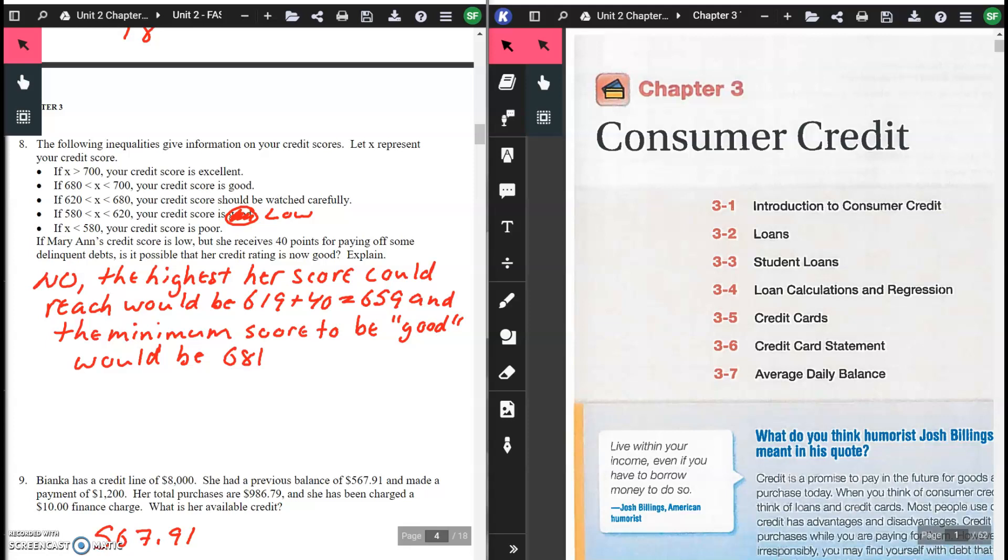Low would mean the highest low would be 619. If you look right up here at the top, between 580 and 620, the highest low that she can get would be 619. Add 40 to that, gives you 659. 659 is going to fall in this range right here, between 620 and 680, and that credit score should be watched carefully. In order to be good, you need to at least be 681. 680 to 700 is considered good. She has a long way to kind of get there yet. So that answer would be no.